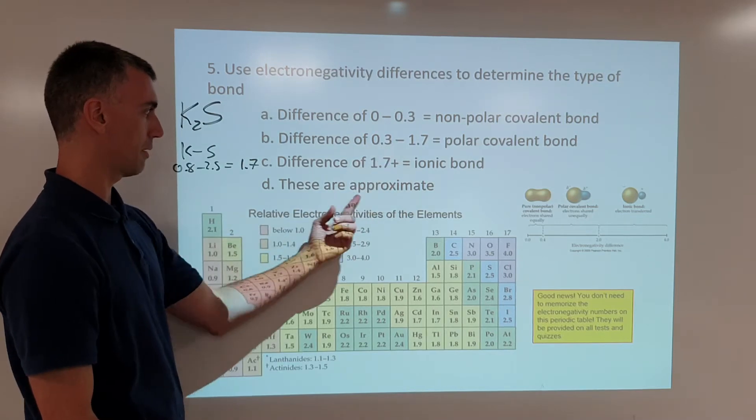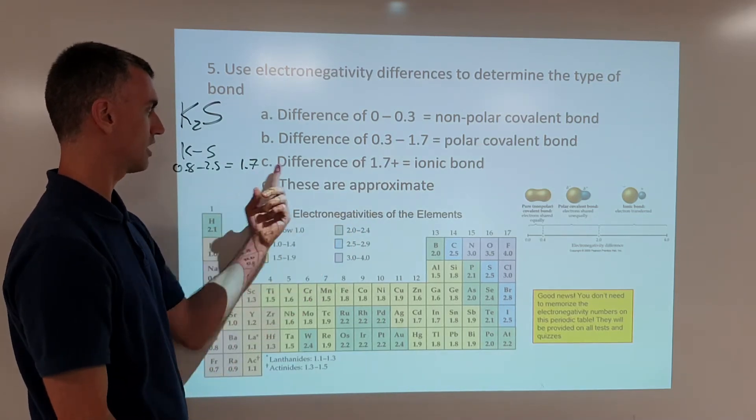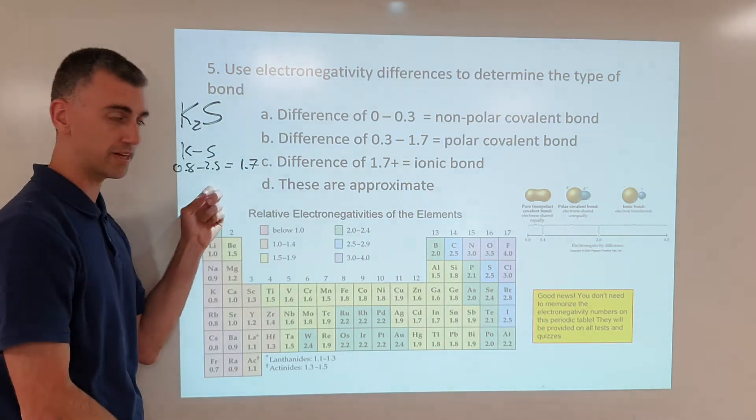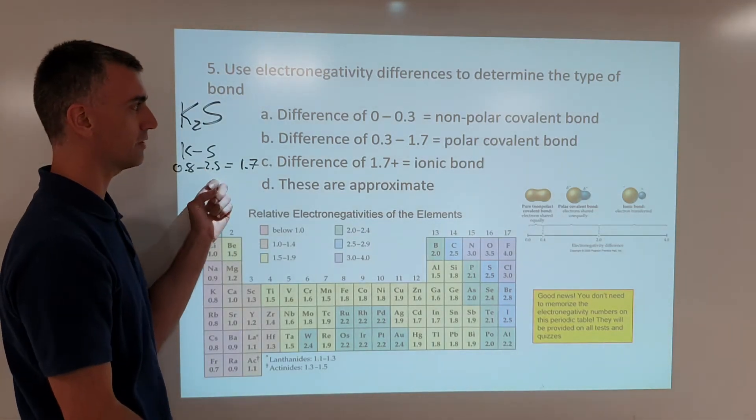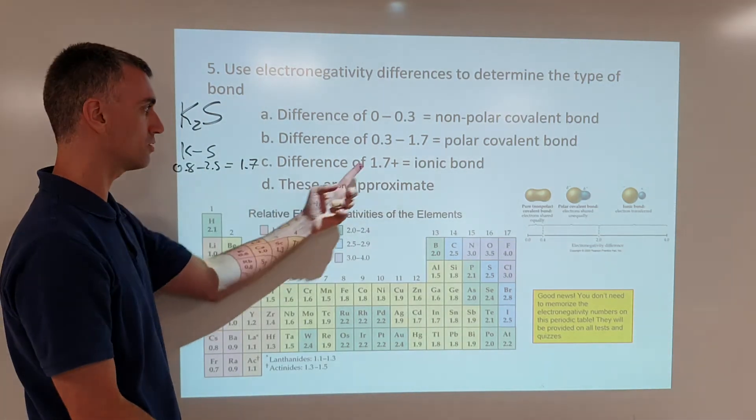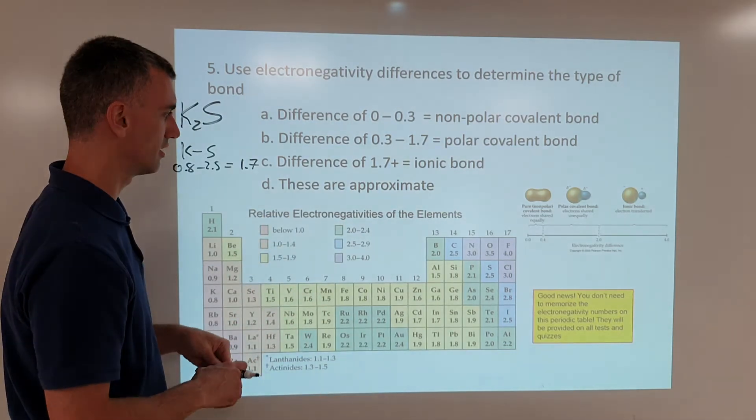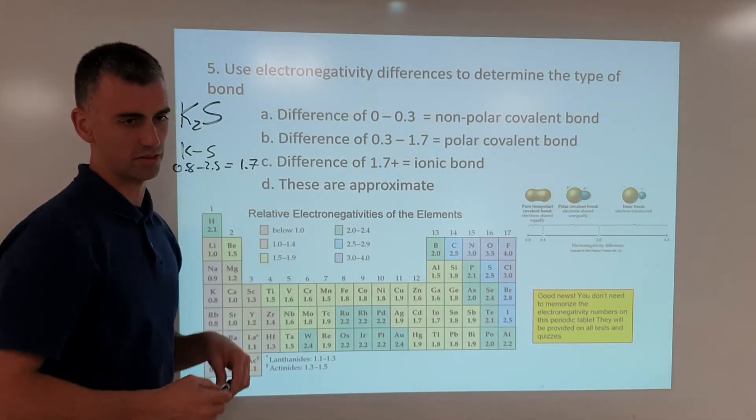this is approximate, which means either answer would be correct. You could put ionic and be marked correct on the test. You could put polar covalent and be marked correct on the test because it falls into a range where both apply. So, having mentioned that,